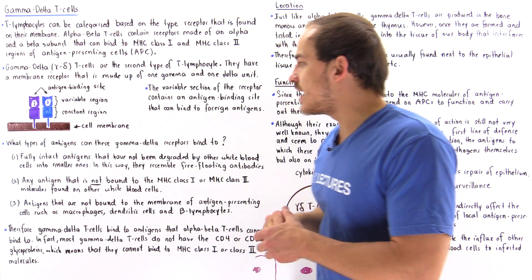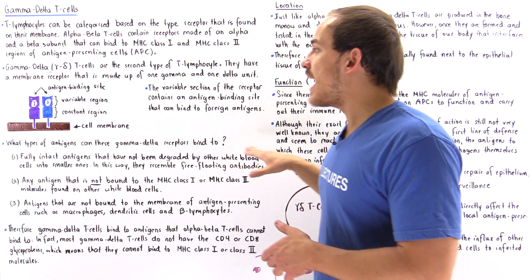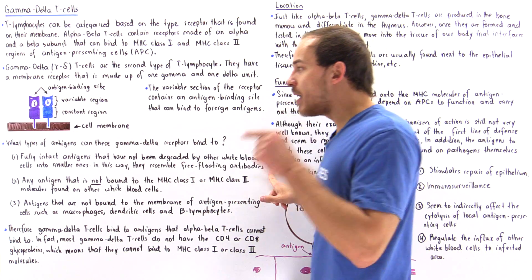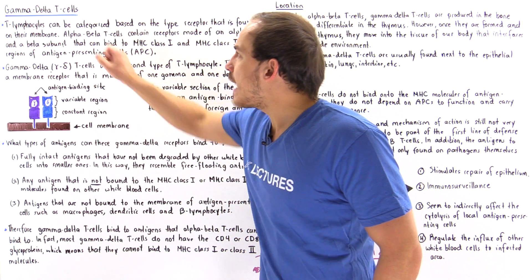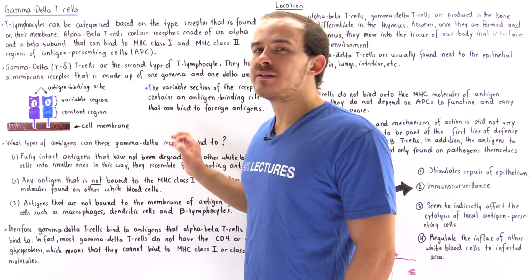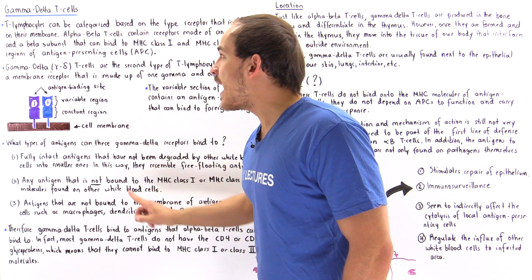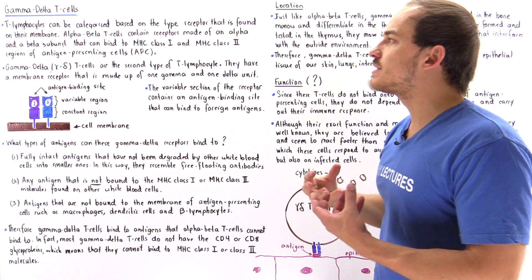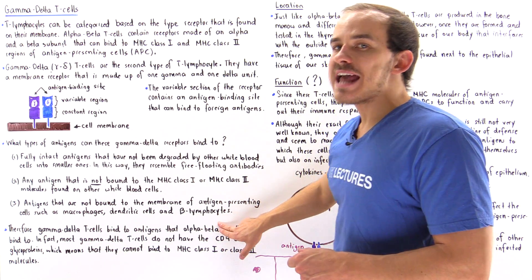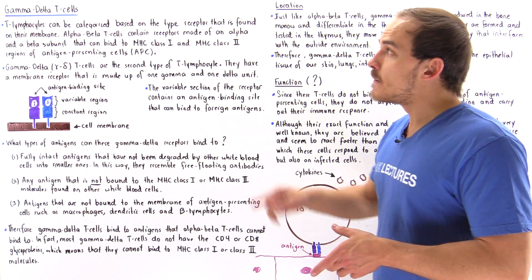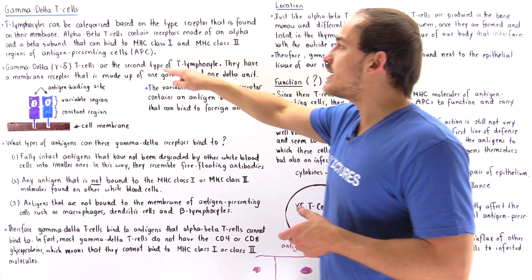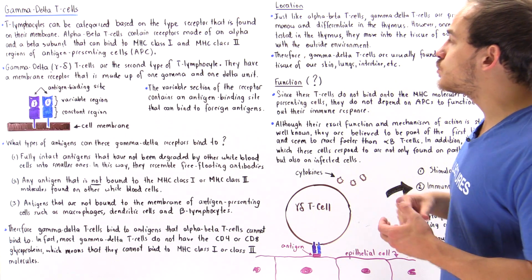Gamma-delta T cells don't have to rely on that single displayed portion of the antigen — they can fully bind to a fully intact antigen in the same way that free-floating antibodies bind onto fully intact antigens. So gamma-delta T cells can bind to any antigen not bound to MHC class 1 or class 2 molecules, meaning they do not depend on antigen-presenting cells to carry out an immune defense response. As a result, gamma-delta T cells do not contain the CD4 and CD8 glycoproteins needed to bind onto MHC class 1 or class 2.